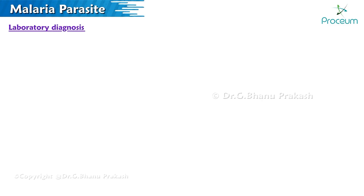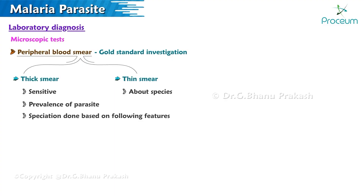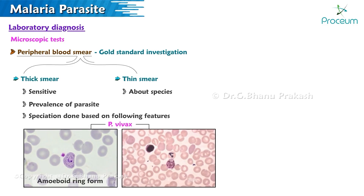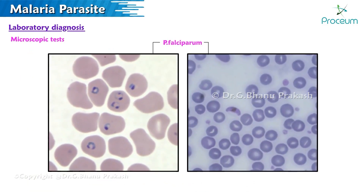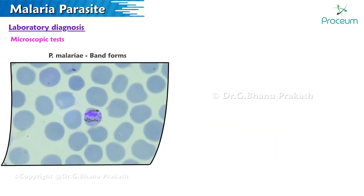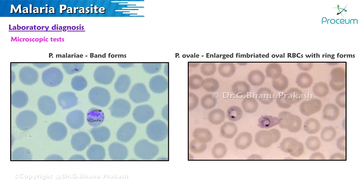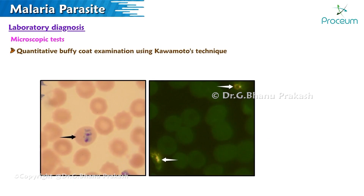Laboratory Diagnosis — Microscopic test: peripheral blood smear is the gold standard. Thick smear is more sensitive and used to detect prevalence; thin smear identifies the species. Plasmodium vivax has amoeboid ring forms and schizonts. Plasmodium falciparum has multiple ring forms, acoly forms, headphone-shaped ring forms, and banana-shaped gametocytes. Plasmodium malariae has band forms. Plasmodium ovale has enlarged, fimbriated, oval red blood cells with ring forms. Quantitative buffy coat examination using Kawamoto's technique uses the fluorescent dye acridine orange, which stains parasitized red blood cells as brilliant green dots.